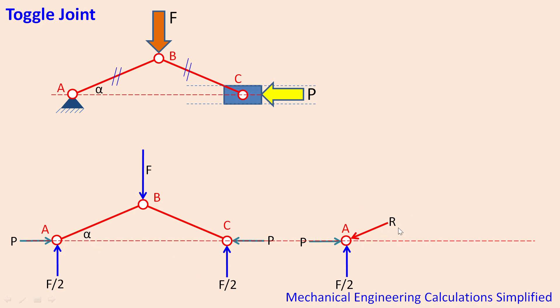So if I consider the node A, it will have three forces to balance out: one vertical force F by 2 which is supporting the vertical applied force F, one horizontal force P which is actually supporting the final output force P, and a reaction in the link R. So actually these three forces can create an equilibrium at this node A.